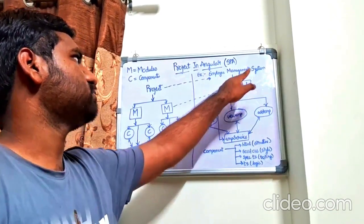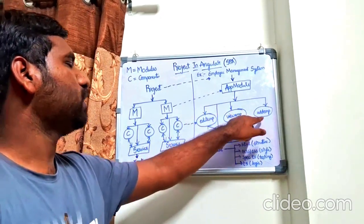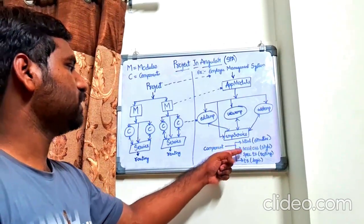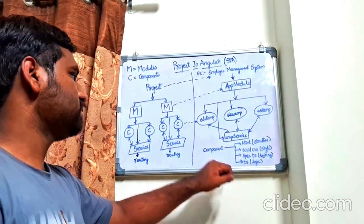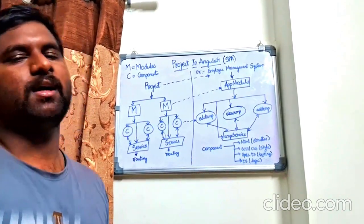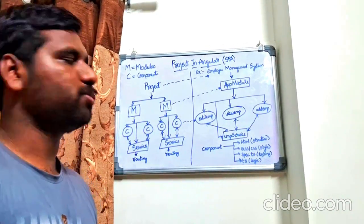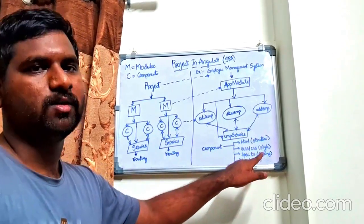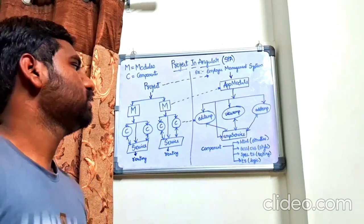Whenever we create Edit Employee, View Employee, or Add Employee — these are nothing but components. Each component consists of HTML, SCSS or CSS, spec.ts, and .ts files. These are the different files present inside a component. The component is nothing but a piece of a block that is used to build the larger blocks of a project. The HTML is used for the structuring of the page, and the SCSS or CSS — Cascading Style Sheets — is used to give style to the page.